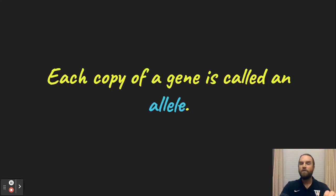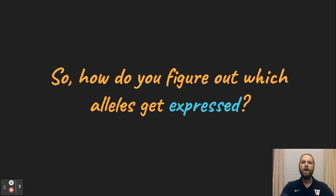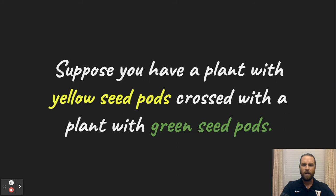So each copy of a gene is called an allele. So we'll make sure we're speaking the same language here. So how do you figure out which alleles get expressed? If I inherit brown eyes from one parent, blue eyes from another parent, how do we determine which allele gets expressed?